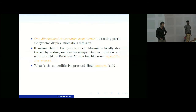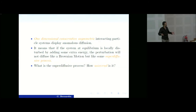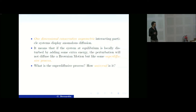This is a joint work with Patricia Gonsalves from Lisbon, Milton Yara from Rio, and Mariel Simon from Lille. In this talk I am interested in one-dimensional asymmetric interacting particle systems which display anomalous diffusion. Anomalous diffusion means that if you take a very extended system which conserves some quantity like energy or mass and you put some extra energy or mass somewhere, the perturbation will not diffuse like a Brownian motion or standard heat equation, but like a super-diffusive process.